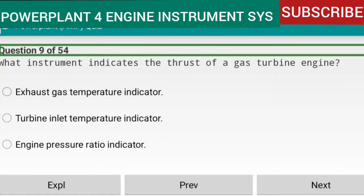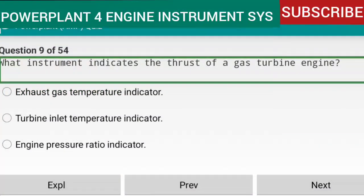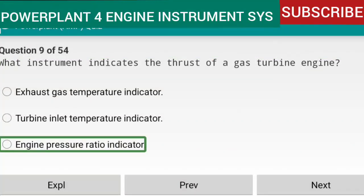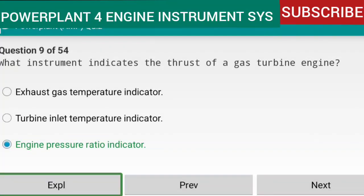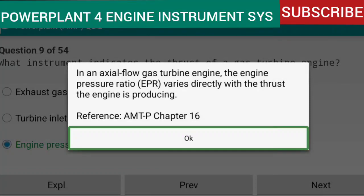Question 9 of 54: What instrument indicates the thrust of a gas turbine engine? Answer: the engine pressure ratio (EPR) indicator. In an axial-flow gas turbine engine, the EPR varies directly with the thrust the engine is producing. Reference: AMTP Chapter 16.